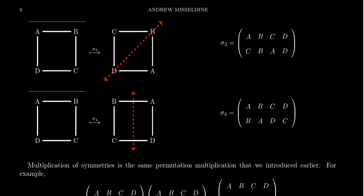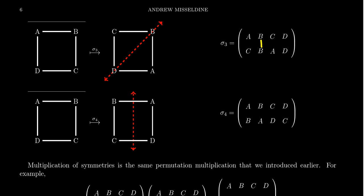We also get a diagonal reflection going from D to B — the southwest to northeast corner. Here B and D stay fixed because they're on the reflective line, but A and C swap locations: A goes to C, C goes to A, B is fixed, and D is fixed. The last reflection is across the y-axis, a vertical axis: A and B swap locations, and C and D swap as well — A goes to B, B goes to A, C goes to D, D goes to C. We call these sigma 3 and sigma 4.